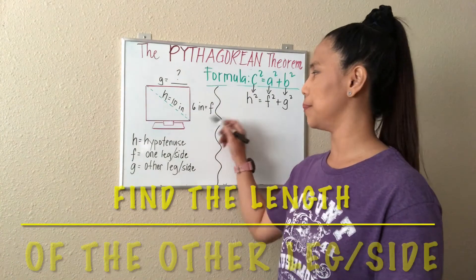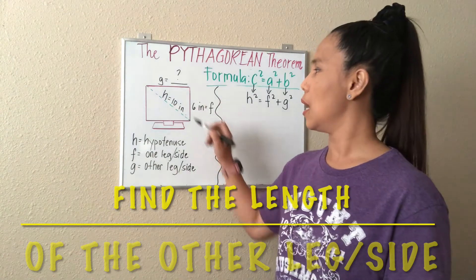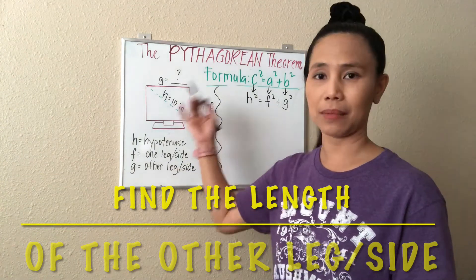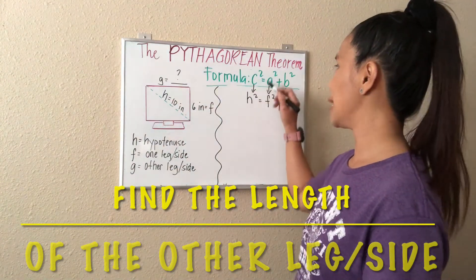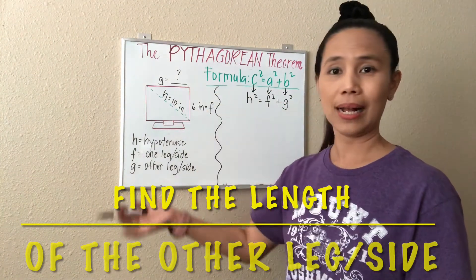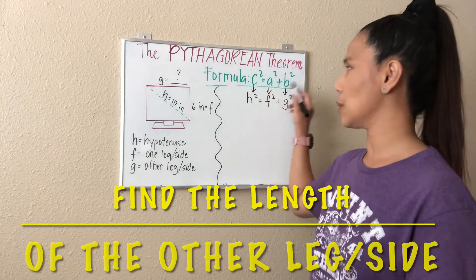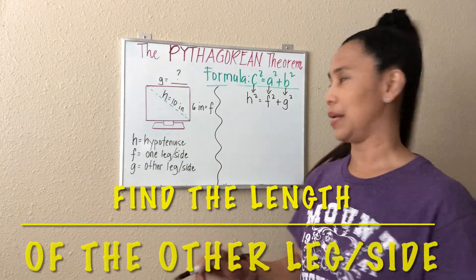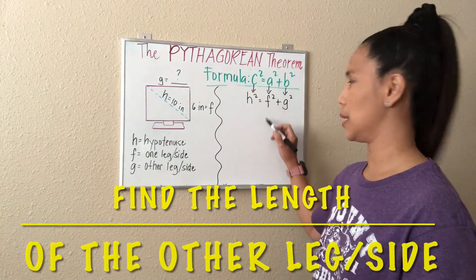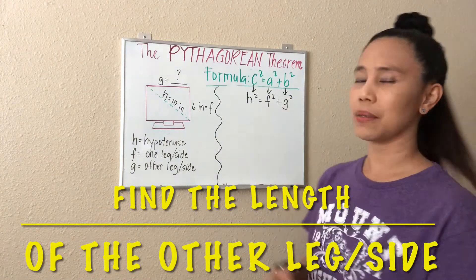A while ago, we were able to find the measurement of one leg, which is represented by F, and it was 6 inches. What if we are to find the value of the other leg, which is represented by G? The same thing — we have to use the formula C squared is equal to A squared plus B squared. Since we have used different letters, that's still alright. C is being represented by H, the hypotenuse, so we just have H squared. A is represented by F, so we have F squared, plus G squared which represents B.